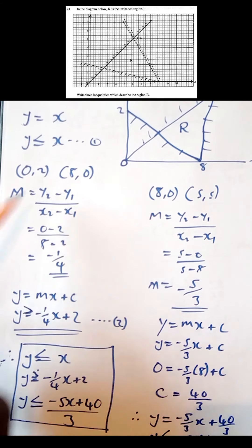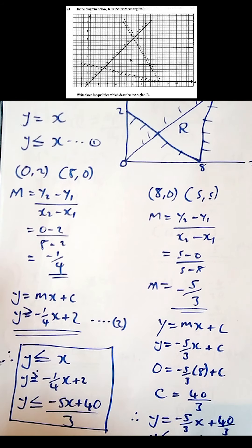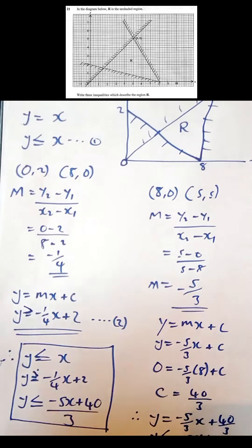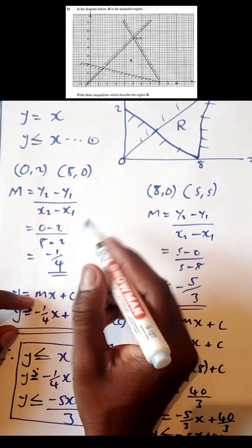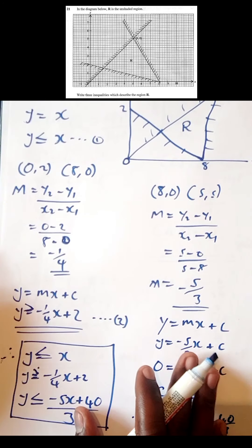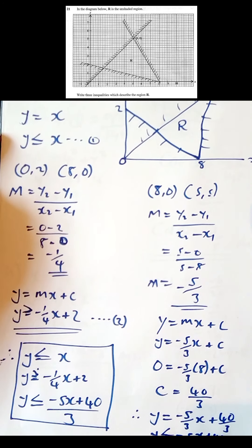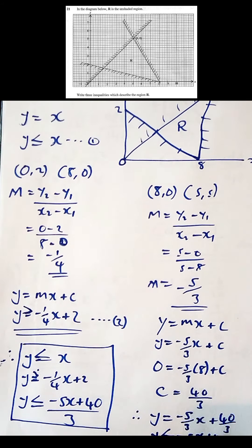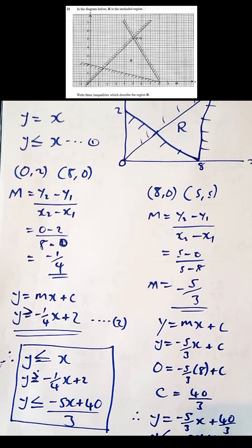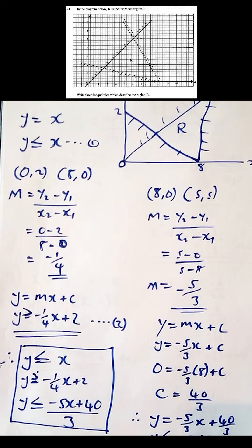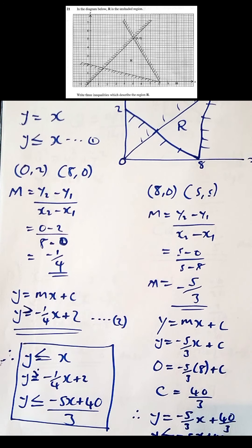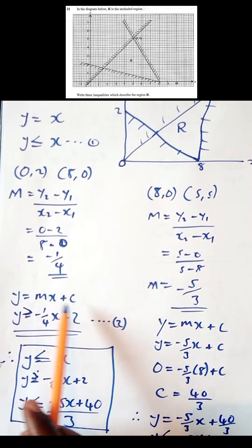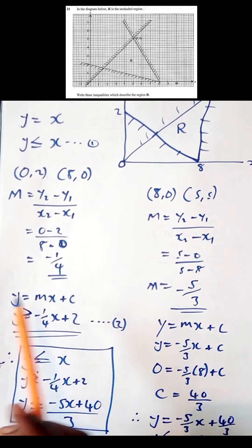Our y2 is 0, y1 is 2, x2 is 8, and x1 is 0. So we get (0 - 2) / (8 - 0) = -2/8 = -1/4. This is the gradient. To find the equation of the line we use y = mx + c, where m is the gradient and c is the y-intercept.